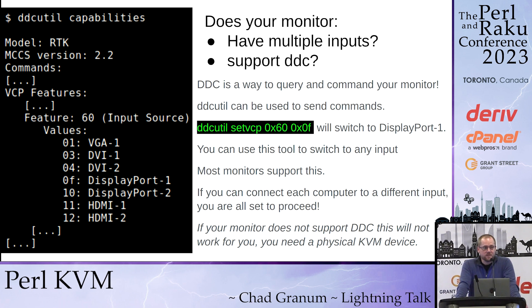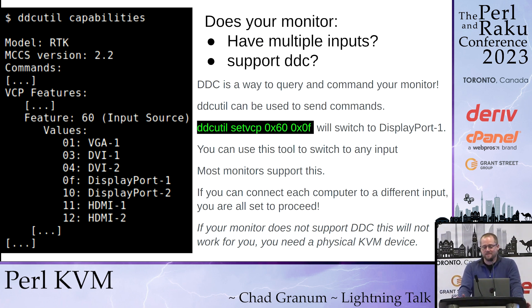So first, does your monitor have DDC and does it have multiple inputs? If it does, then that's half of the battle right there. DDC lets you query your monitor and switch outputs programmatically. In this case, ddcutil set all that garbage will set you to DisplayPort 1. All you have to do is query your monitor and find the right values. If your monitor doesn't support DDC, you will have to get a KVM — I don't have a solution for you.